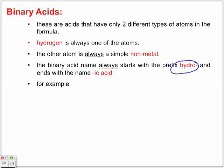Now with the name, we're looking at the non-metal. The non-metal, we used to use the IDE ending when we were naming compounds with the non-metal. But now the IDE ending is no longer going to be an IDE ending, it's going to be an IC ending, and we're adding the word acid to it.